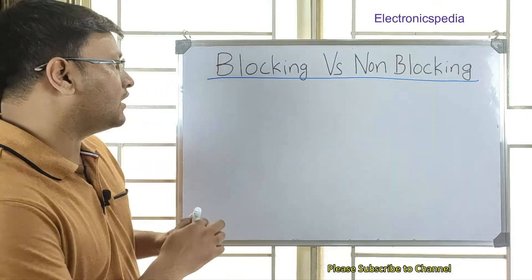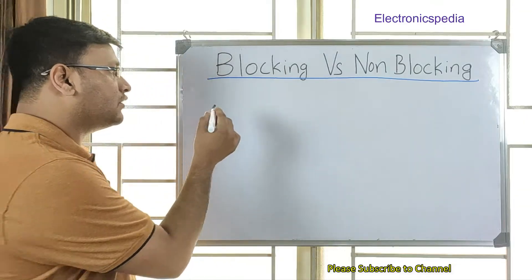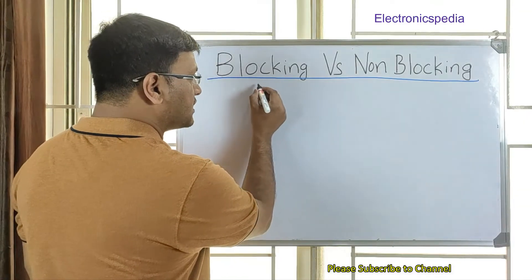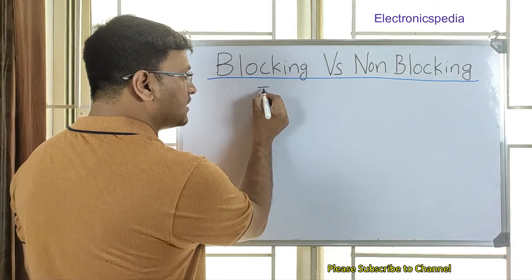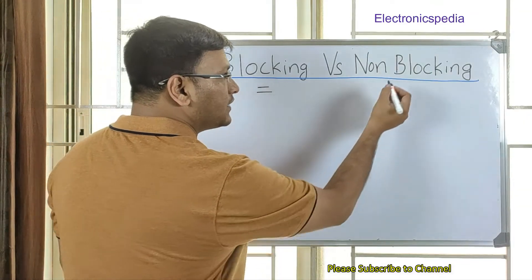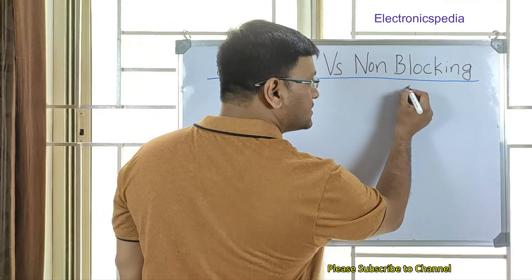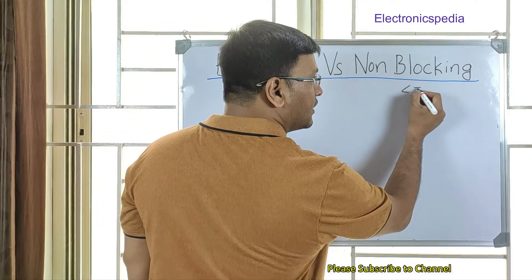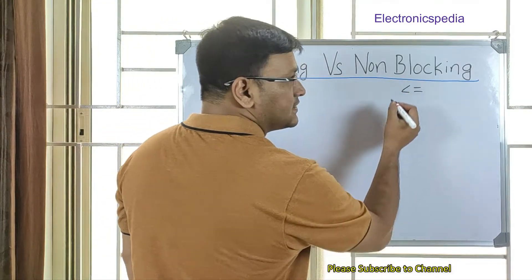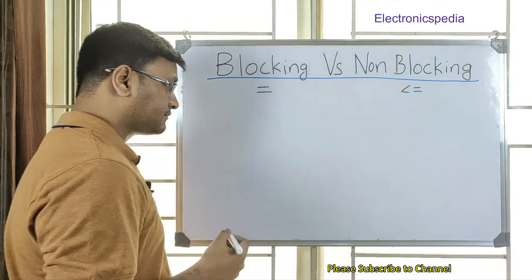The notation for a blocking statement is '=' and the notation for a non-blocking statement is '<=' (less than or equal).